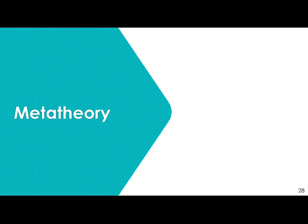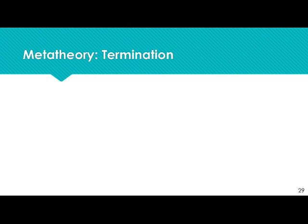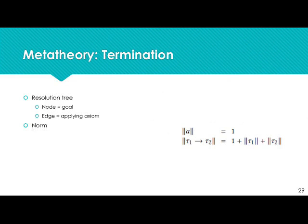The final interesting point in our work is the meta-theory, particularly the termination of our constraint entailment. We represent our resolution derivation as a resolution tree where each node is a wanted constraint, each edge corresponds to applying an axiom from the program theory simplifying into residual constraints as children. We define a basic norm for types and require that applying an axiom always strictly decreases the norm of the contained type in the head of the constraint. Since the norm is always a natural number, no infinite paths may exist and resolution must terminate.